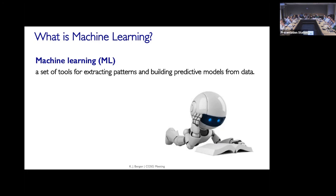A lot of these are predictive models, but there's a broad range of kinds of machine learning. Machine learning sounds sophisticated, and some methods are, but a lot of the methods are drawn from applied statistics. Methods like linear regression, logistic regression, and principal component analysis, which many scientists use regularly, are actually examples of simpler machine learning techniques. A lot of the techniques that people are using now are more sophisticated, complex versions of what scientists have already been doing for a long time.